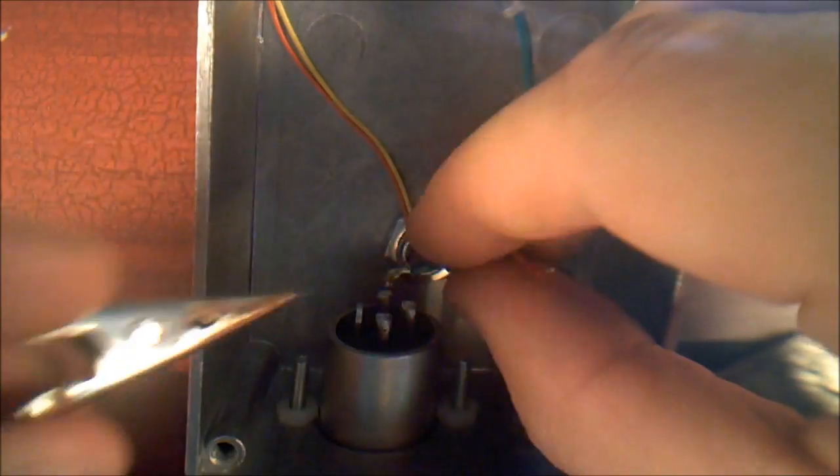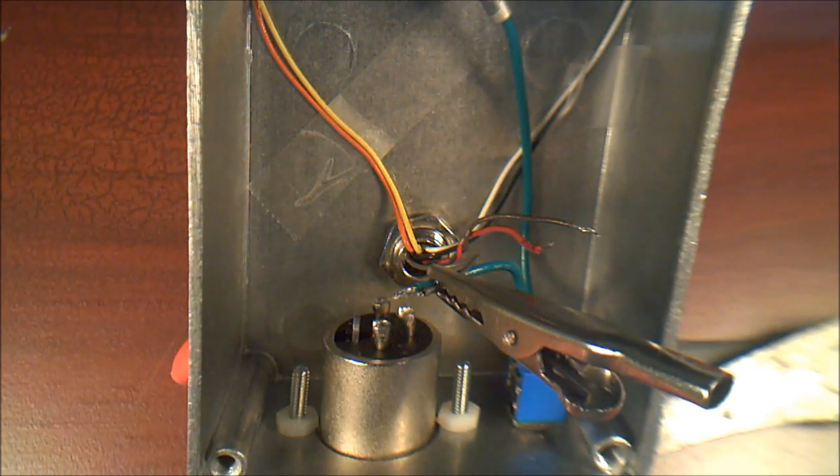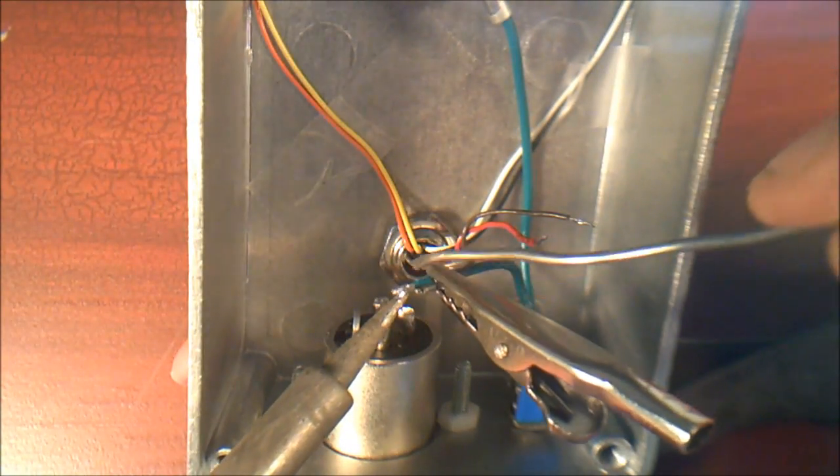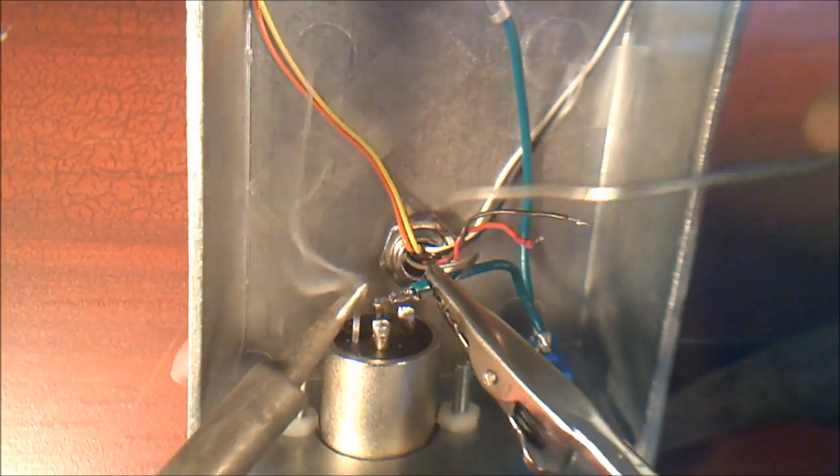Now for the XLR jack. The first thing we're going to do is twist the gray lead from the transformer with the green lead from the switch. These will both be going to pin one, so we'll twist and solder them together first.